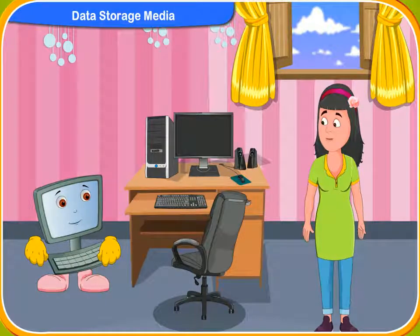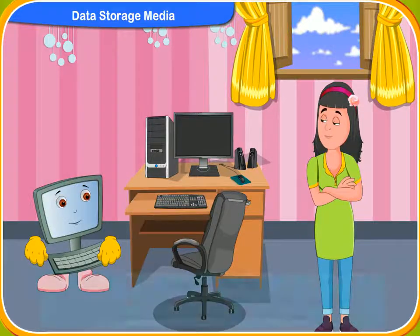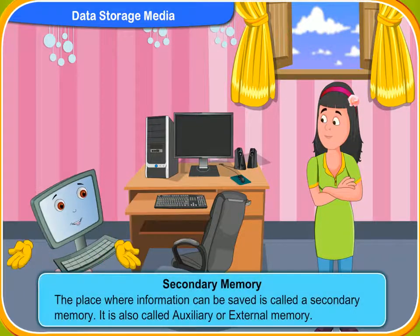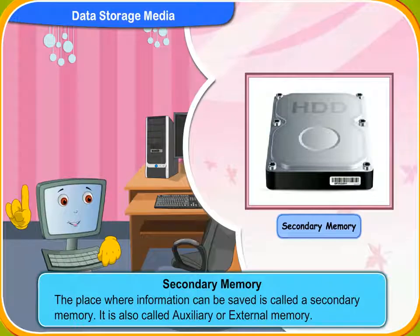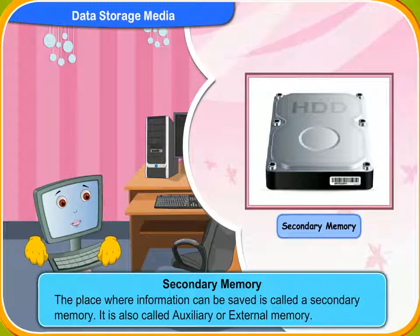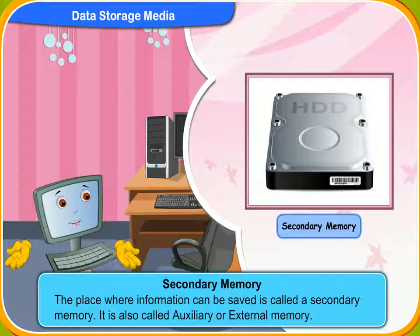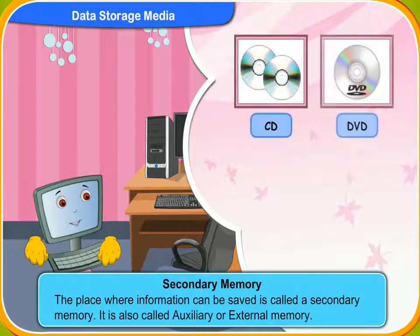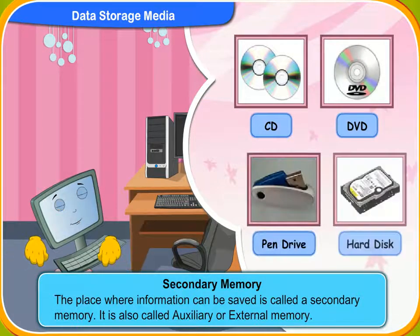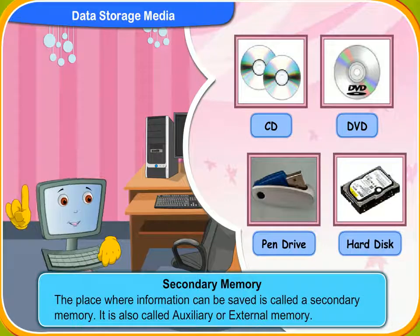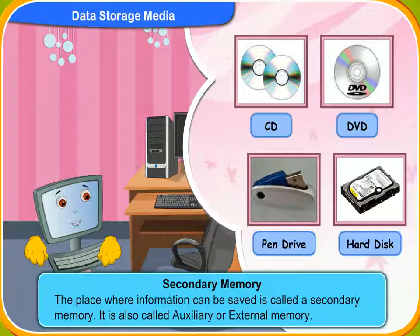But what is secondary memory? The place where information can be saved is called secondary memory. It is also called auxiliary or external memory. CDs, DVDs, pen drives and hard disks are examples of secondary memory.